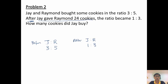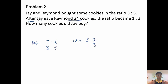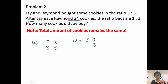Now we ask: what remains the same? What changed? Both ratios should change because Jay loses cookies and Raymond gains cookies. Jay will have fewer cookies and Raymond will have more. But the key is: if I give you and you receive from me, between the two of us, the total amount of cookies remains the same. So we find the total amount.